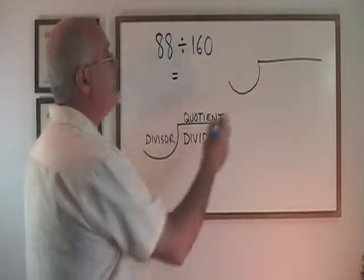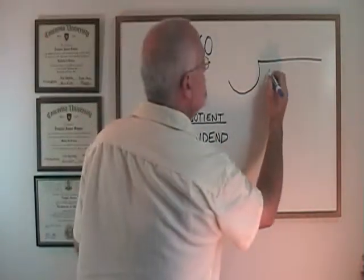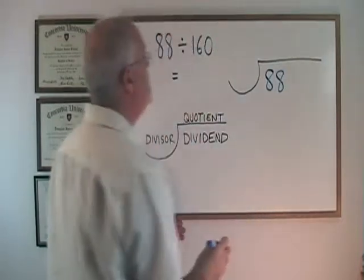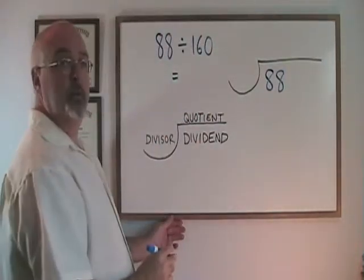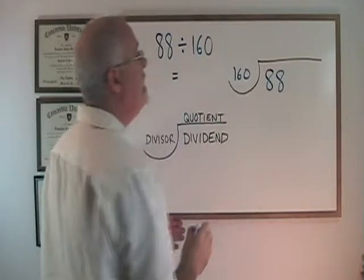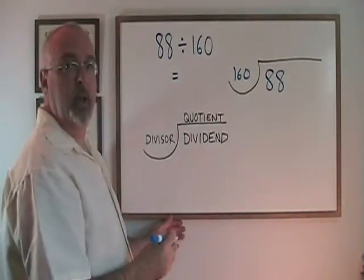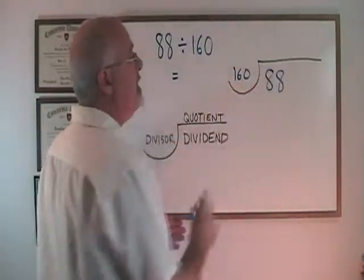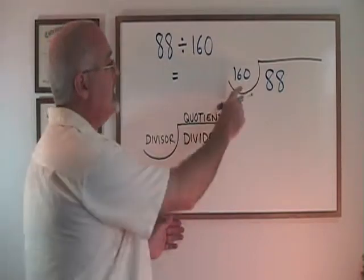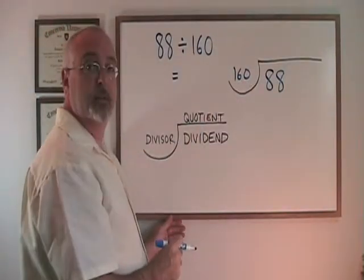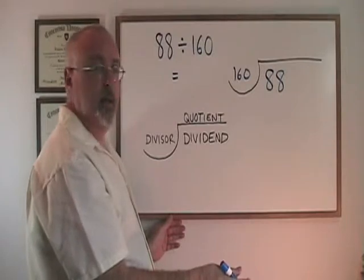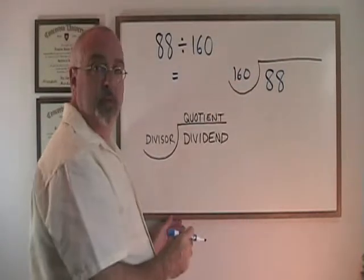In this case, 88 is our dividend so we write it inside. 160 is the divisor. We write it in here and we will write our answer, the quotient, up here on top. The first thing we have to do is look for the decimal in our divisor. The decimal comes after 160, which means the decimal is in the right place.